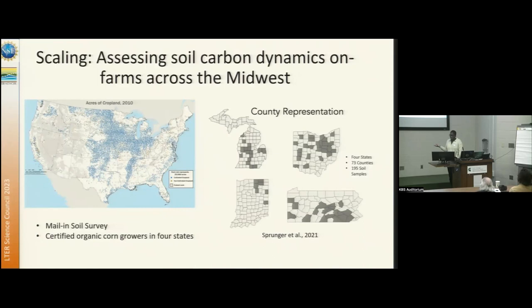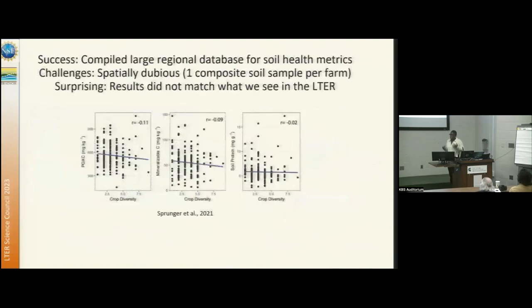Some of you might think that's not that much, but when we think about actually working farms sending us soils and management survey data, that actually hasn't really been done in the literature. What we see when we look at this data set is some really interesting things. A big success is that we're able to compile a large regional database of various soil health metrics, which tell us a lot about soil organic matter on working landscapes. A challenge is that this is spatially dubious — we only get one composite soil sample per farm — so we need better ways to sample these farms more intensively to get at soil carbon stocks.